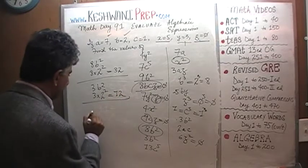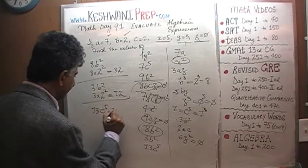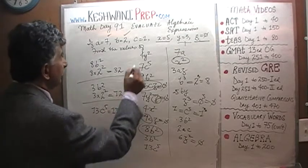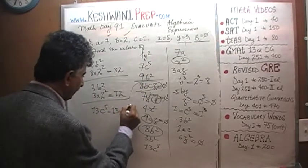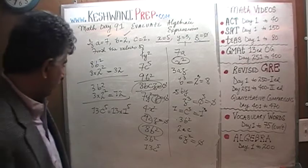And finally, 13C to the 5th is 13 times C, which is 1 raised to 5. 1 raised to 5 is just 1, it's just 13.